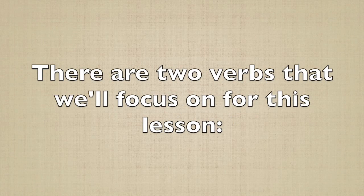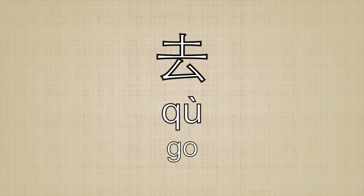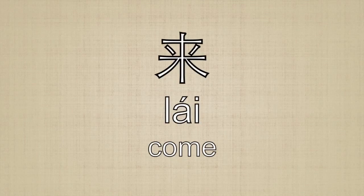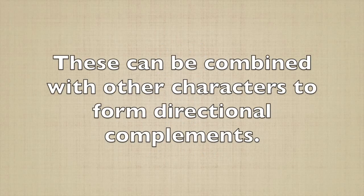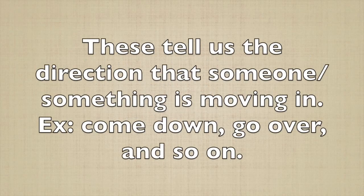There are two verbs that we'll focus on for this lesson: 去, meaning 'go,' and 来, meaning 'come.' These can be combined with other characters to form directional complements, which tell us the direction that someone or something is moving in.